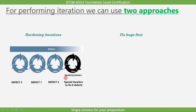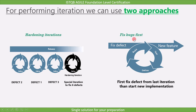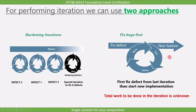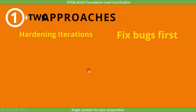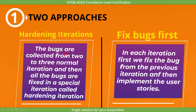The best practice is that no feature is considered done until it has been integrated and tested with the system. The fix bugs first approach addresses defects remaining from the previous iteration at the beginning of the next iteration, as part of the backlog for that iteration. However, some complain that this results in a situation where the total work to be done in the iteration is unknown, making it more difficult to estimate when the remaining features can be done. In summary: in hardening iteration, bugs are collected from two to three normal iterations and fixed in a special hardening iteration; in the fix bugs first approach, each iteration begins by fixing bugs from the previous iteration before implementing new user stories.